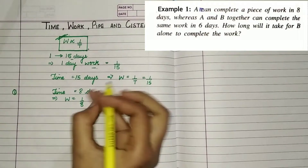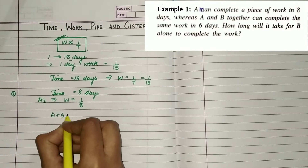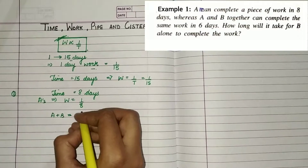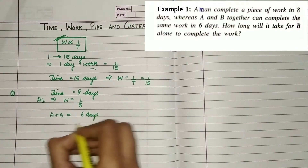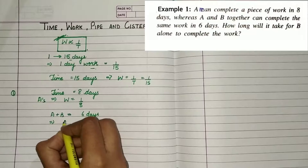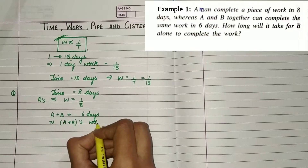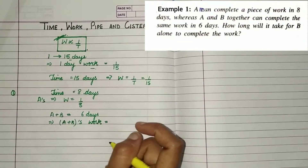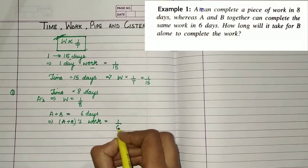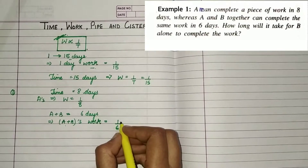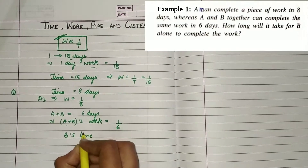Since work and time are inversely proportional, if the time is 8 days, then A's work per day is 1 upon 8. When A and B work together, they finish the work in 6 days. So A and B's combined work per day is 1 upon 6.